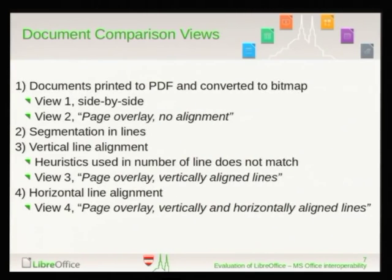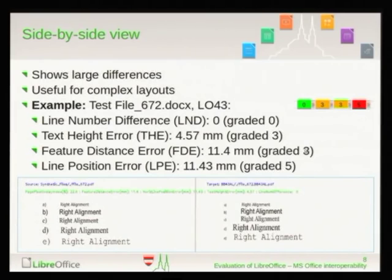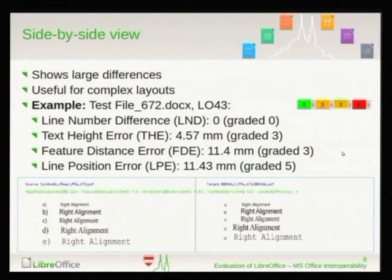So an example: I have a set of documents. This one was tested by LibreOffice 4.3 and these numbers were computed. Height error was nearly five millimeters — there were some differences between lines. Feature distance — meaning the details — was 11 millimeters, so quite a lot. The line position error was similar. In my reports it looks like this: zero for the same number of lines, grades three for two measures, and grade five. They are encoded in color so it's visually easy to perceive what's there without reading the numbers.